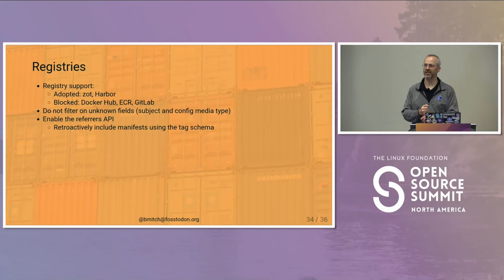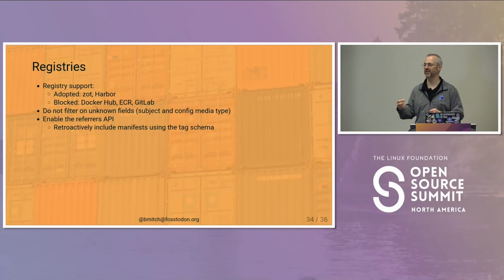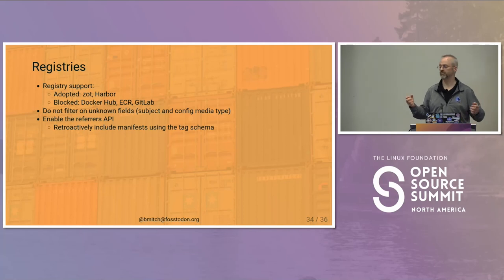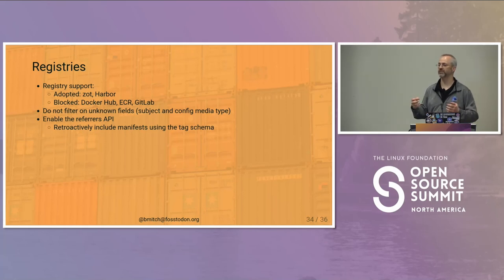GitLab has an allow list of what kinds of artifacts they allow on their registry. If you're not a container image or a Helm chart, you need to go to them to get put on their allow list. That's just their design decision — I'd love to see them allow anything so users can be flexible, but we're not there yet today. Other than those on this list, either I haven't tested you or for the most part registries just work with this because it was all built in the spec already and we're extending it with other fields. This is something you can use today on just about everywhere.